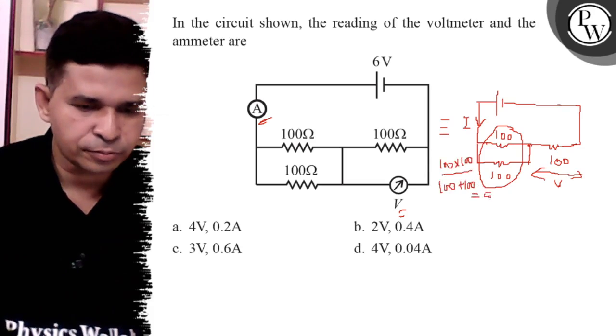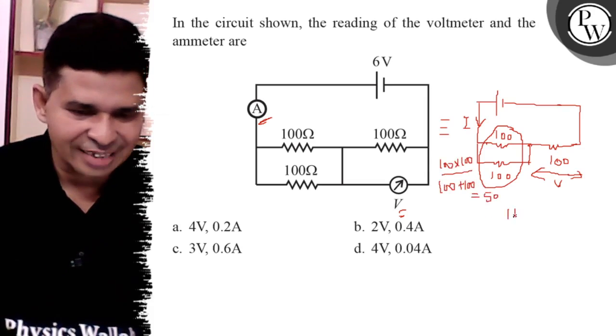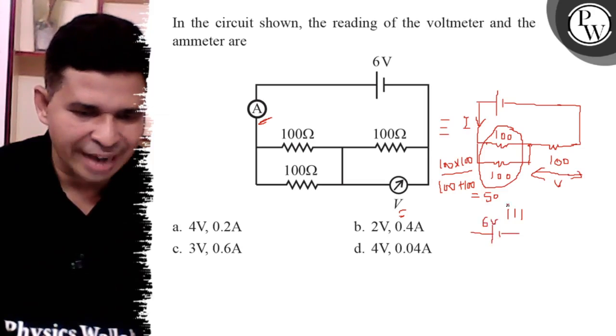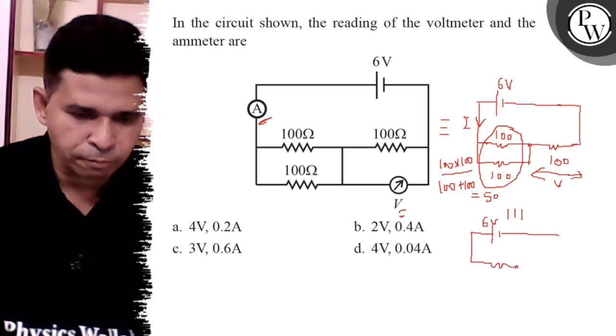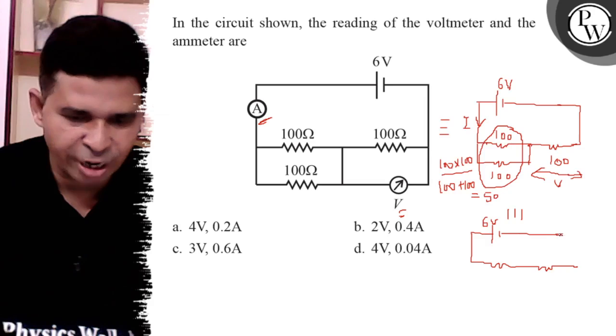So that circuit is: 6 volt battery, 50 ohm here, and 100 ohm here.